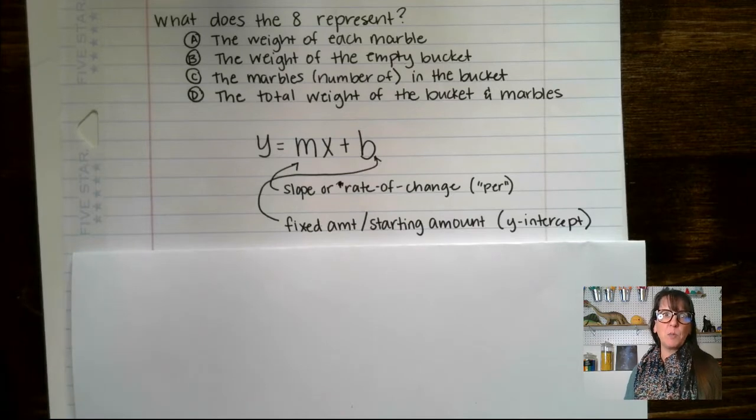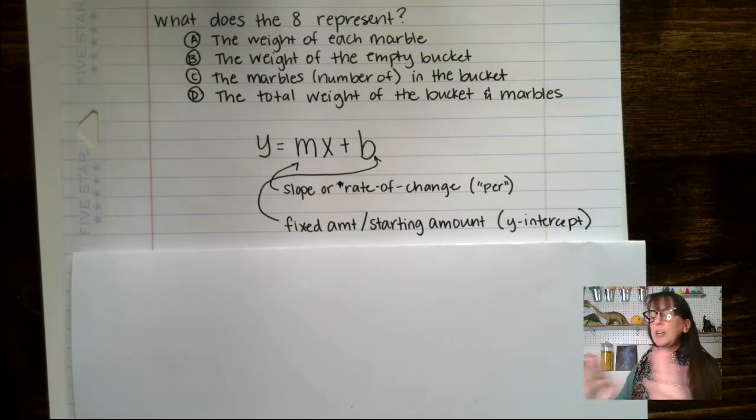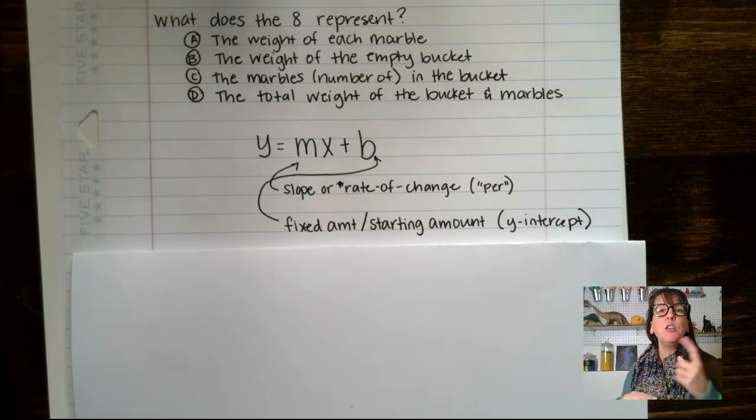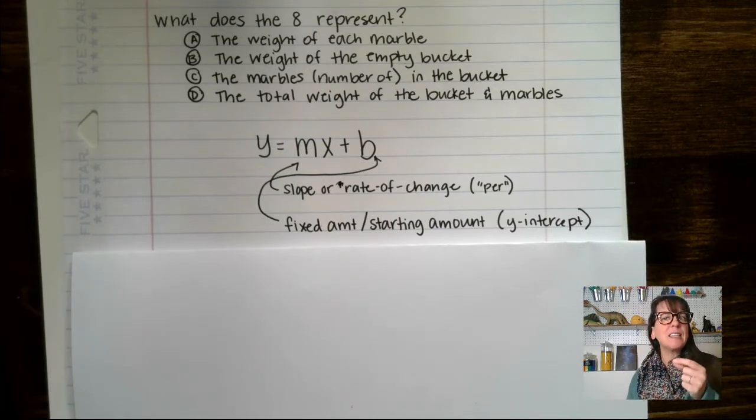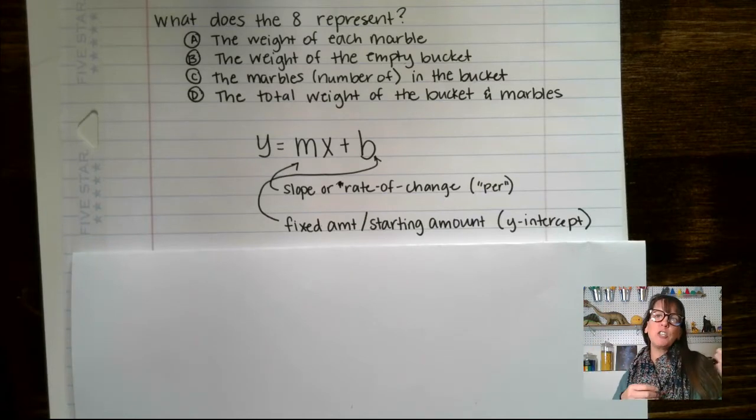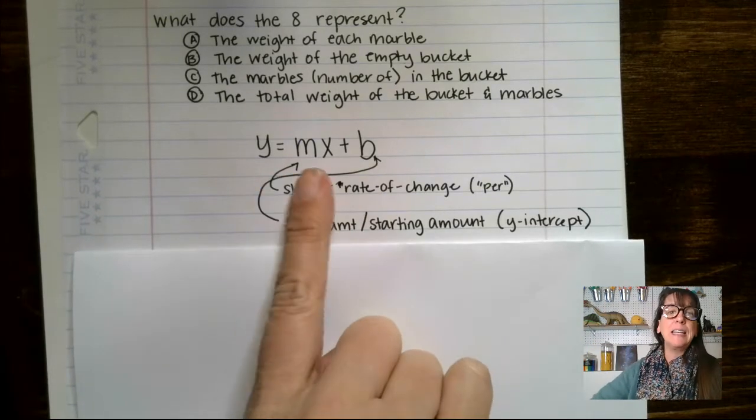A good example of this would be, let's say you have to pay $10 for a movie membership every month. No matter what, you have to pay $10, and then you pay a dollar per movie. Situations like that, where you have a fixed amount and a changing amount, are often represented by linear equations.